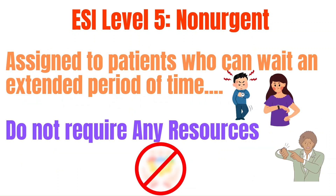For level five, these are known as non-urgent patients. It is assigned to patients who do not require immediate attention, have no life-threatening conditions, and may wait for an extended period of time. Examples include cold symptoms, work notes, medication refills, and suture removal. These patients do not require any resources and are able to wait for an extended period of time.